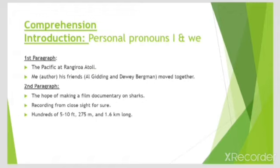In paragraph 1, the author says they went to dive in the Pacific at Rangiroa Atoll, which is in Tuamotus. Rangiroa Atoll is an island where people also live, so there is residency as well. The author decided to go there with his two friends, Al Giddings and Devi Bergman, and these three decided to go for shooting sharks.